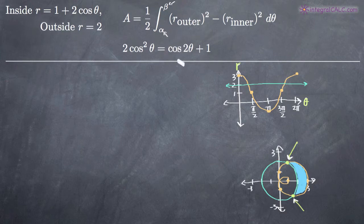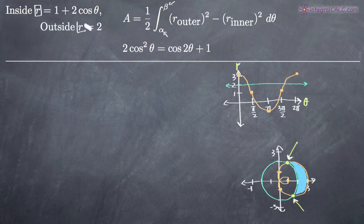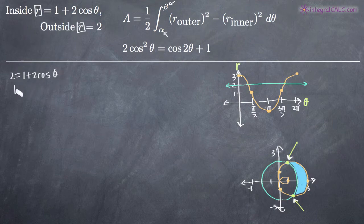To find those points of intersection, we can set the curves equal to one another. Since they're both equal to r on the left side of the equations, we can set the right sides equal to one another. So we'll get 2 equals 1 plus 2 cosine theta. We'll subtract 1 from both sides to get 1 equals 2 cosine theta, then divide both sides by 2 to get one half equals cosine theta.